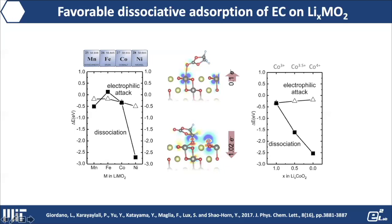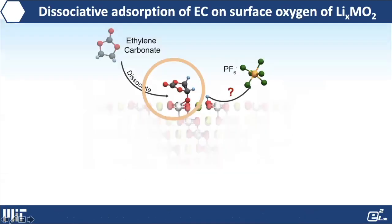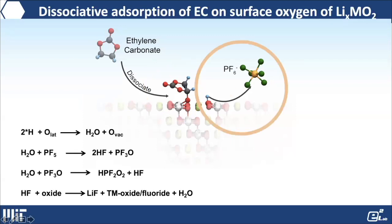To put this simply, we propose a mechanism where on late transition metal oxides with high covalency — also in a highly charged state — EC or other linear carbonate molecules can come to the surface and become dissociated, generating protic species. These protic species absorbed on the surface oxygen can further react with the salt to generate HF, which can then react with the oxide, potentially leading to crack generation and electrode swelling.